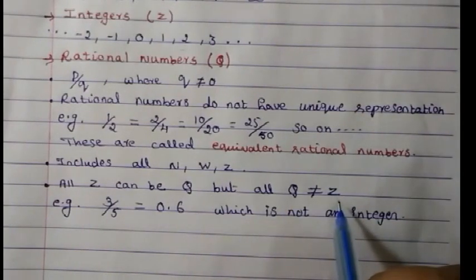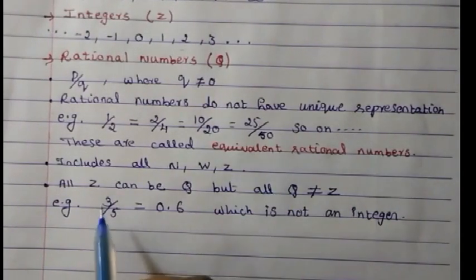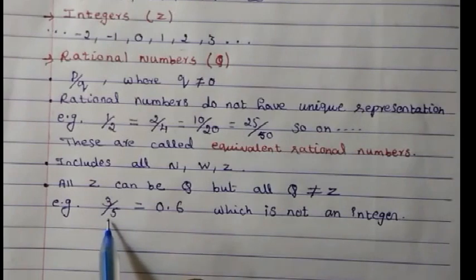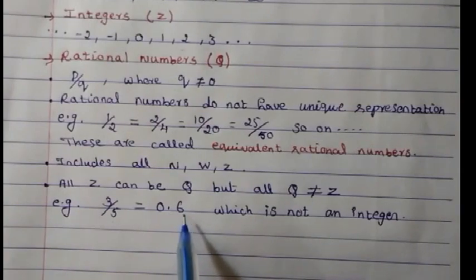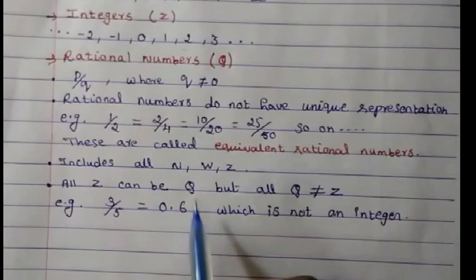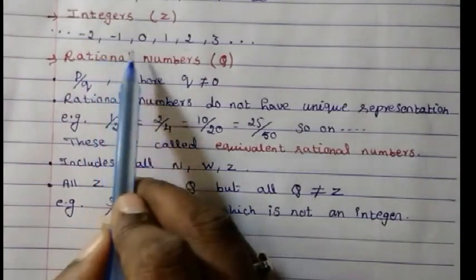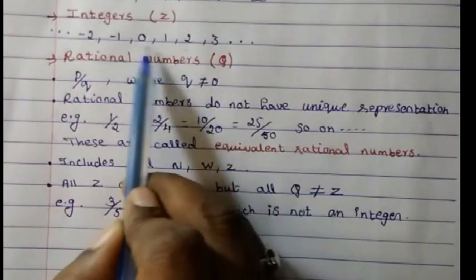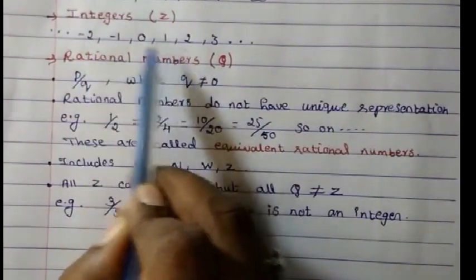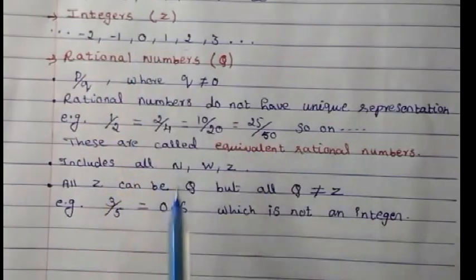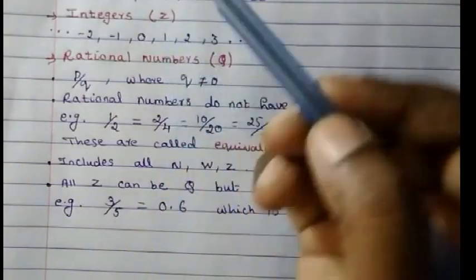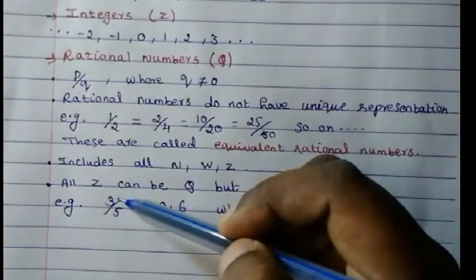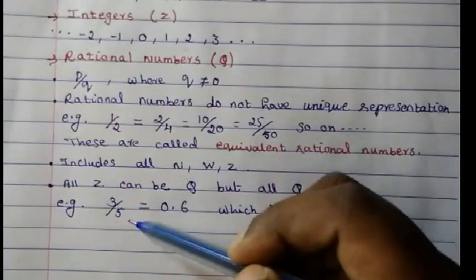For example, 3/5: if you divide 3 by 5 you get 0.6, which is not an integer. If you look at integers, do you have any decimals there? No. You have all positive numbers, negative numbers, and 0, but you don't have any decimals in integers. Therefore all integers can be rational numbers, but not all rational numbers can be integers.